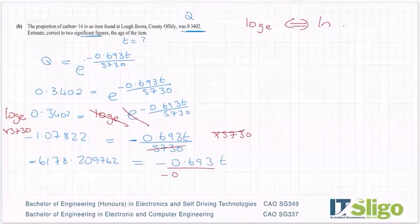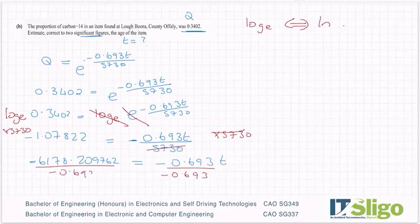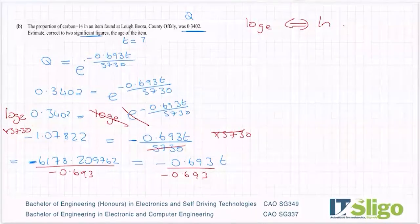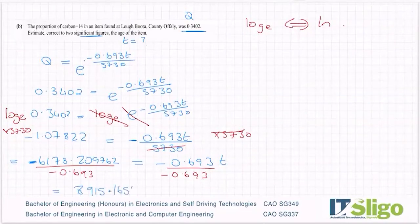I'm then going to divide everything by 0.693, minus 0.693. So divide that by minus 0.693, and I got 8915.1656 years.